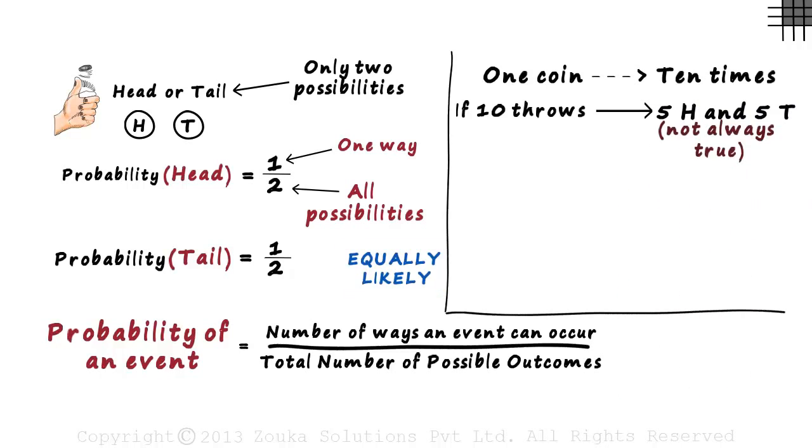This will not always be true. You may get 6 heads and 4 tails. Or maybe 9 heads and a tail. Or maybe even 10 tails.